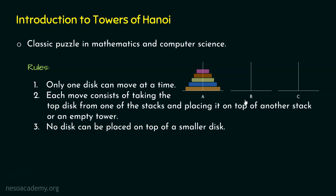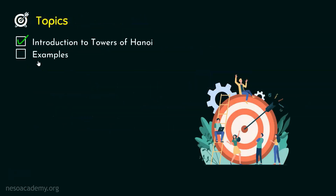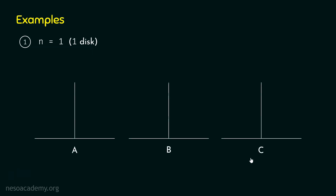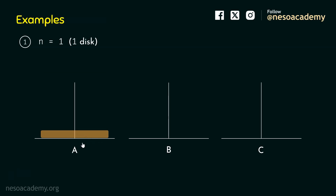Now, as we have understood the rules, we know what Towers of Hanoi is and how it got its name. Let's move to the next topic where we will discuss some examples. Example number one is n equal to one, meaning we are considering only one disc. We have the three towers and only one disc in tower A — this is the initial state.